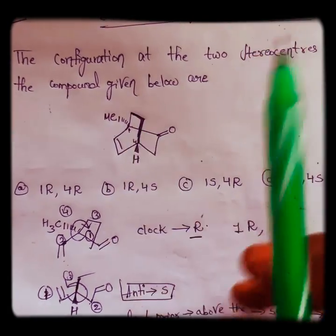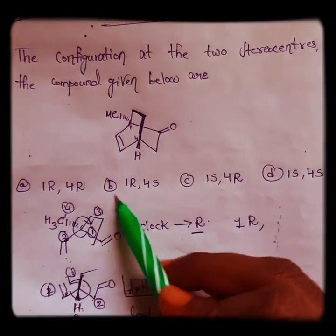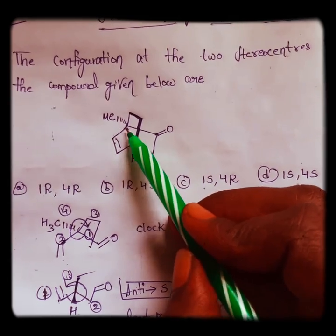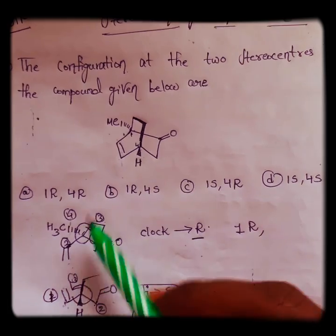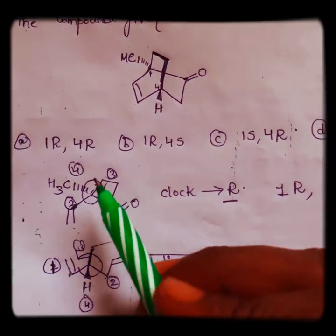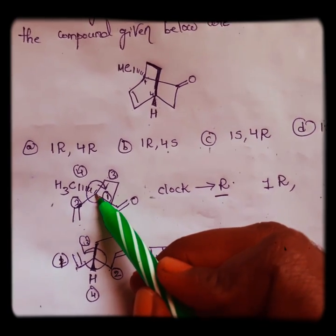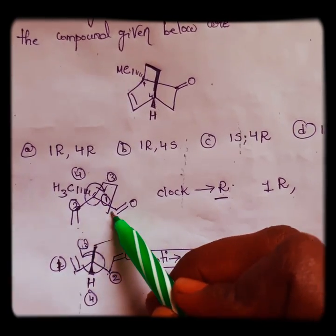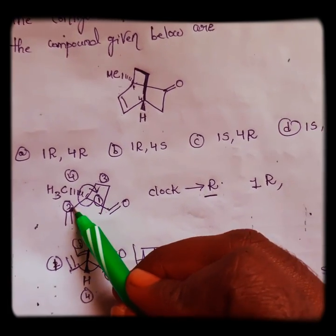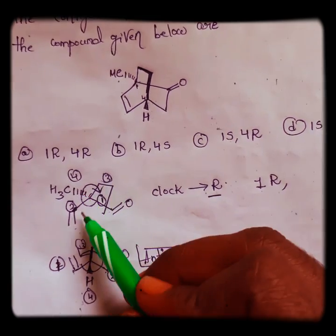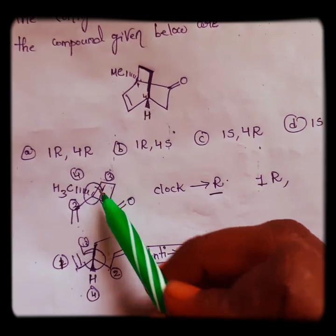So first we'll take position one. I don't need to draw it completely because we just need to assign configuration here. Let me draw this. This carbon's continuation we have to observe. We already know how to assign R and S, so first we look at the atoms.